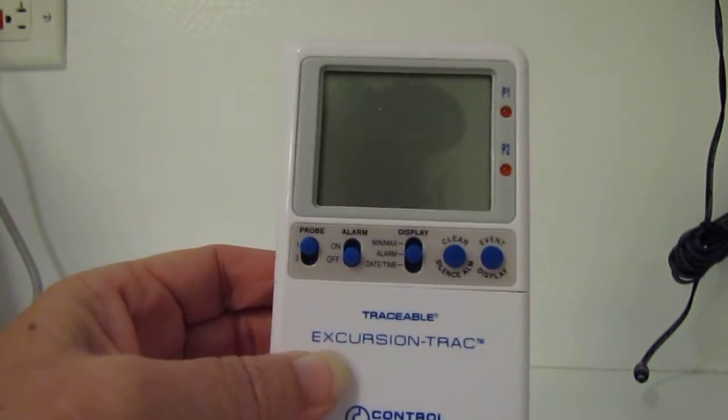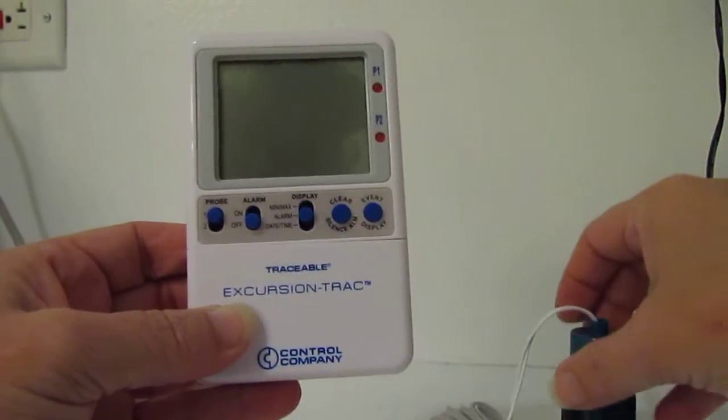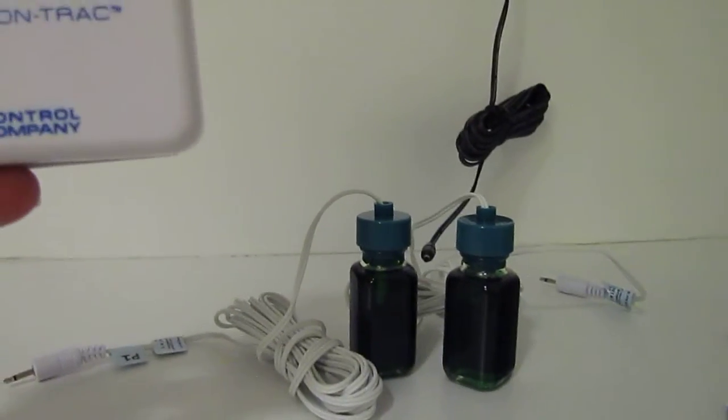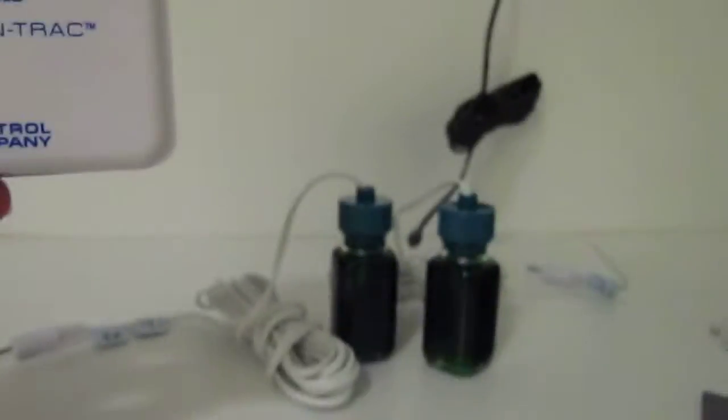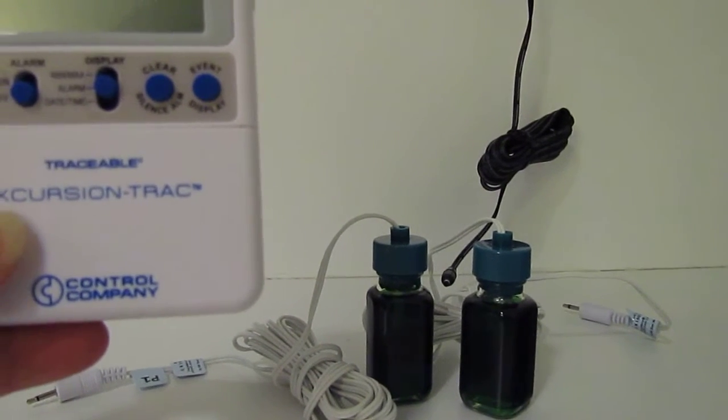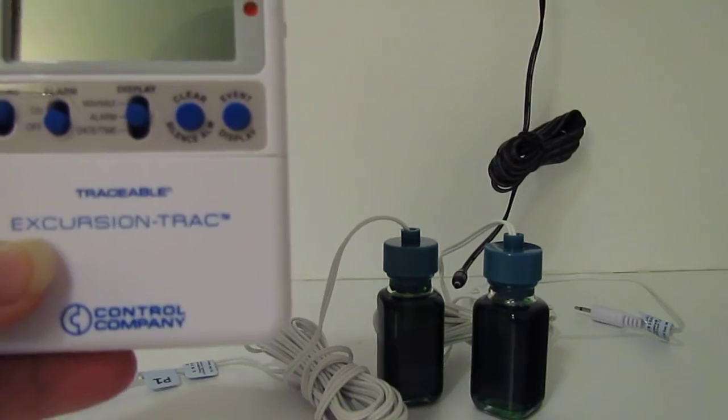When you first get the package, you need to make sure you have the correct thermometer, which has two bottles and two probes. If you don't have two, that is not the refrigerator thermometer. If it just has one probe, it is for your outreach cooler.